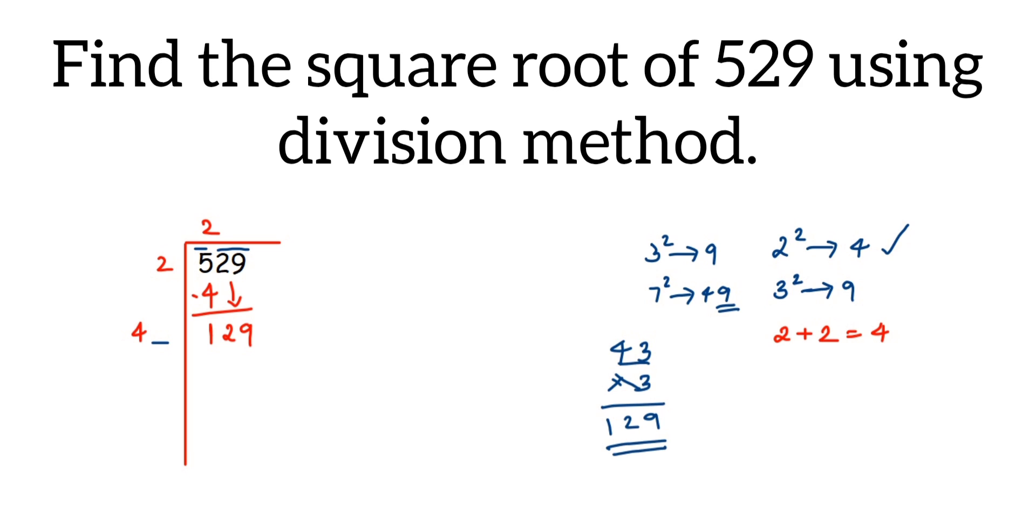So 43 times 3 is 129. So we will write here 3 in the divisor and 3 in the quotient. So 43 times 3 is 129. Now subtract we get 0. So when we get 0 which means that the given number 529 is a perfect square number and the square root of 529 is equal to 23. You have to just write the number which is in the quotient. That's it.